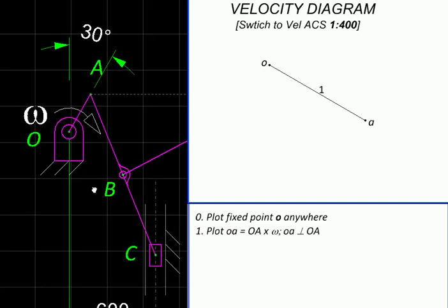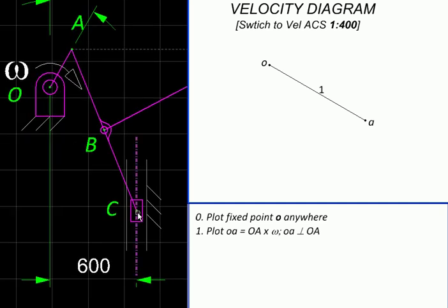Next, we proceed to point C. We know that with respect to A, point C will execute a circular motion, so velocity of C relative to A will be perpendicular to AC.